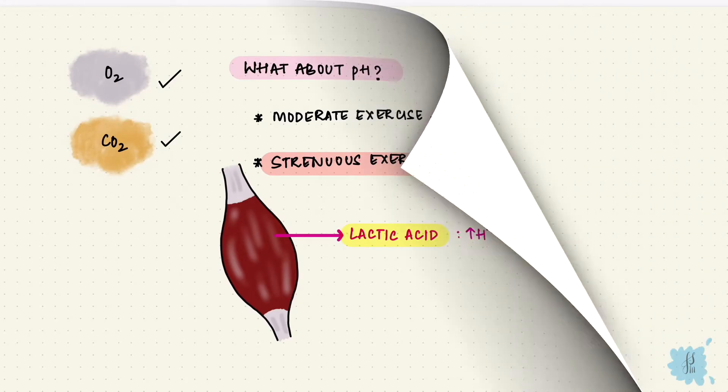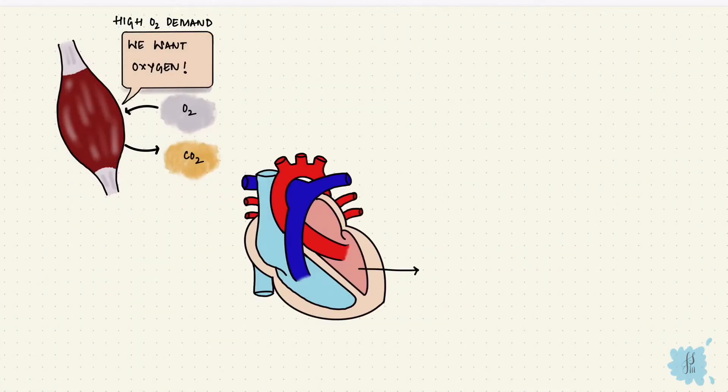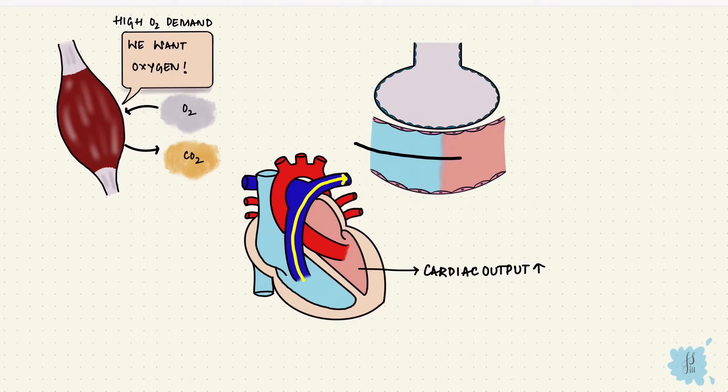To meet the oxygen demand, the cardiac output increases. The cardiac output from the right heart therefore also increases, and that's pulmonary circulation. So pulmonary blood flow increases.